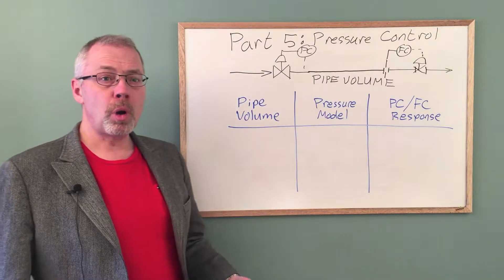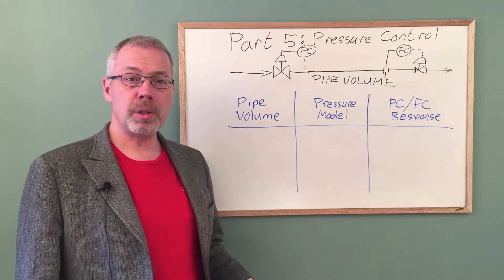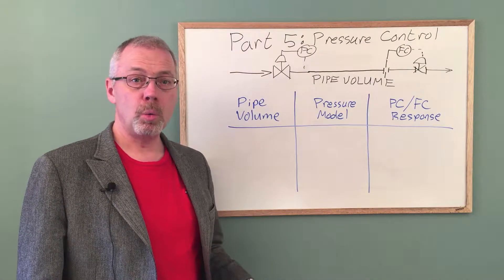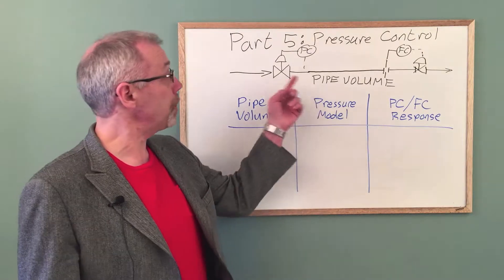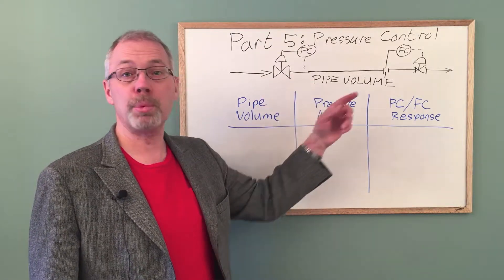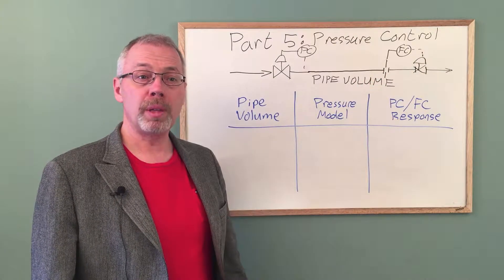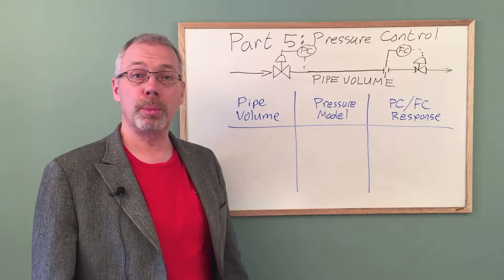Pressure control is commonly used on utility supply systems to ensure reliable performance of a flow controller. We will look at an example where fuel gas pressure is controlled on the upstream side of a flow controller. One example of this is the firing train for a boiler.